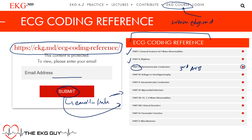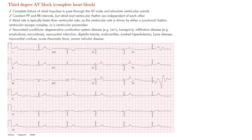Third-degree AV block, or complete heart block, is where you have complete absence of AV nodal conduction. No supraventricular impulses are conducted to the ventricles, so there is no relationship between the P waves and the QRS complexes. This results in AV dissociation, where the P waves march out on their own and the QRS complexes go at their own rate, independent of each other.